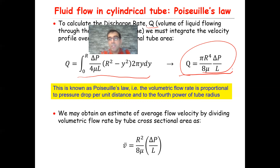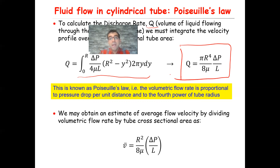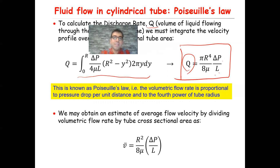This equation Q = pi·R⁴·delta P/(8·mu·L) is known as Poiseuille's Law. It states that the volumetric flow rate Q is proportional to the pressure drop per unit length delta P/L and to the fourth power of the tube radius R. This gives the volumetric flow rate through a single cylindrical tube.